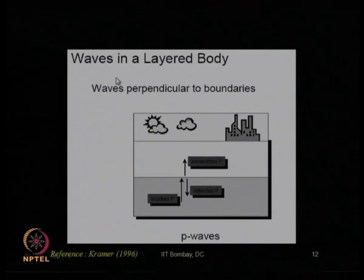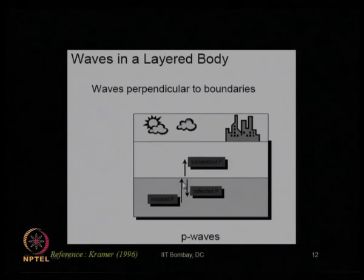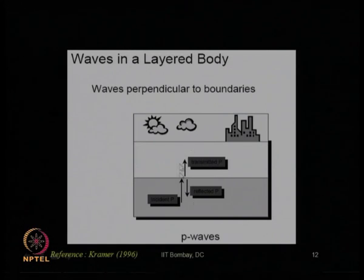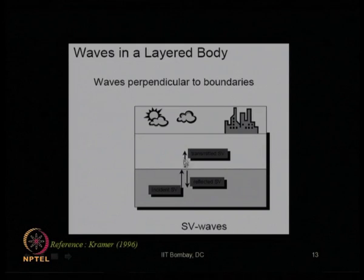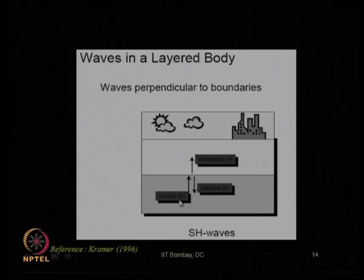Let us now talk about waves traveling in a layered body. Waves perpendicular to the boundaries will also be transmitted as perpendicular waves. For a vertical incident P wave, we get reflected P wave and transmitted P wave. For a vertical incident SV wave, we get reflected and transmitted SV waves. For a vertical incident SH wave, we get reflected and transmitted SH waves. These three cases are valid only for vertical incident waves.